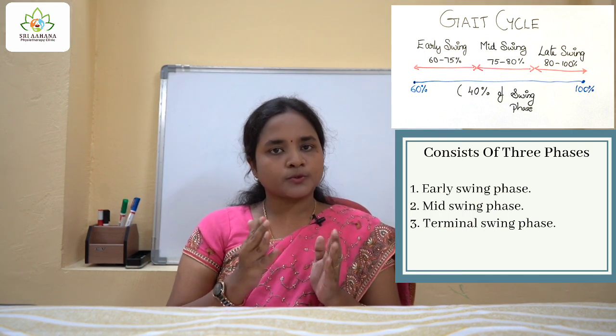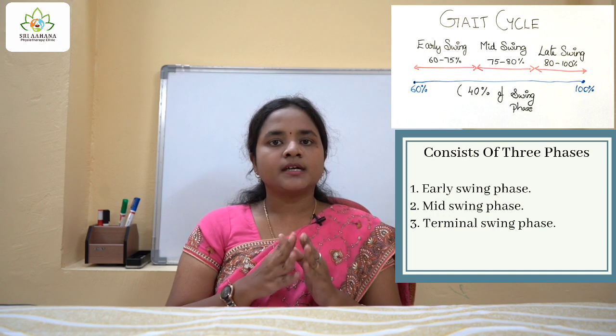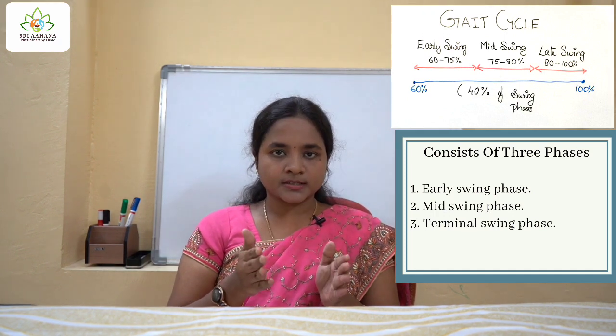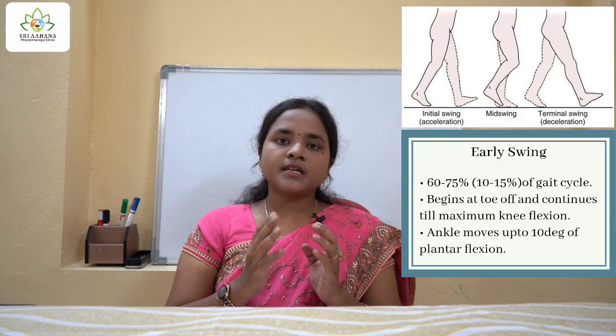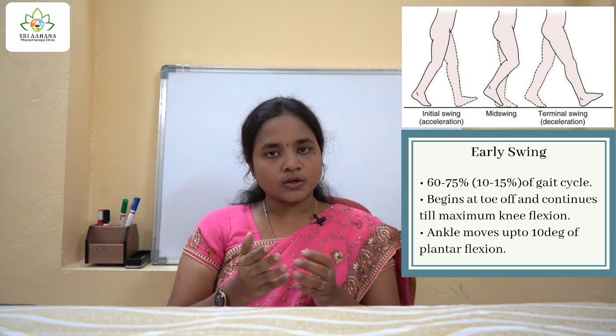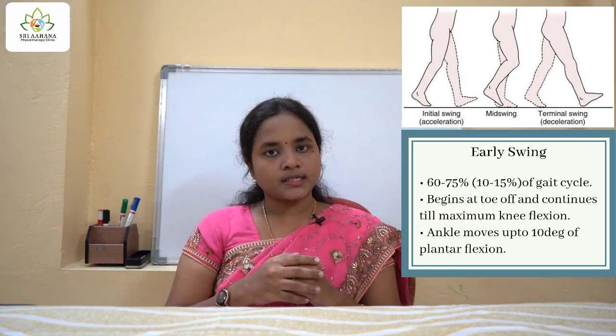This 40% is divided into three events. The first will be the early swing. The early swing phase is nothing but the initial swing or the acceleration phase.